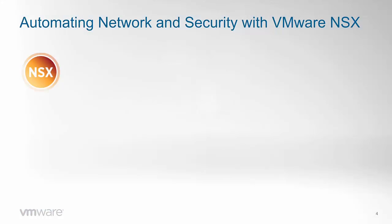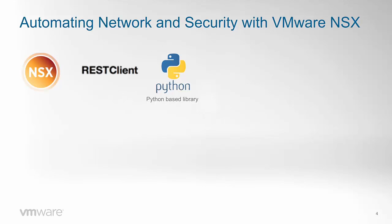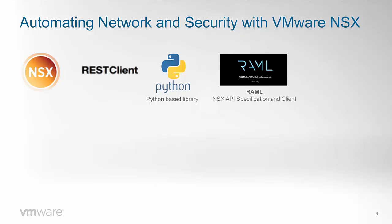NSX by itself automates network and security deployments — from the central console with just a few clicks you can create new networks and security policies applied almost immediately across your infrastructure. NSX also exposes REST APIs, publicly documented and consumable with your favorite REST client. If you prefer Python, there is a Python-based library on GitHub to control NSX. There is also a RAML specification file describing the NSX APIs, plus a RAML client that takes that file and composes the needed API call. PowerShell extensions for NSX are also available for download.